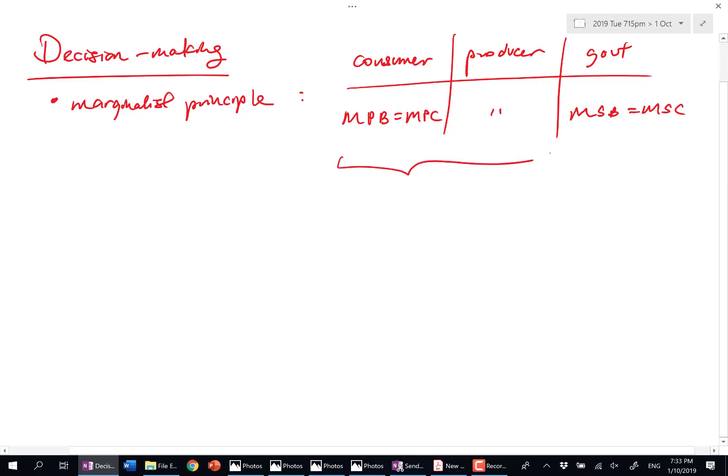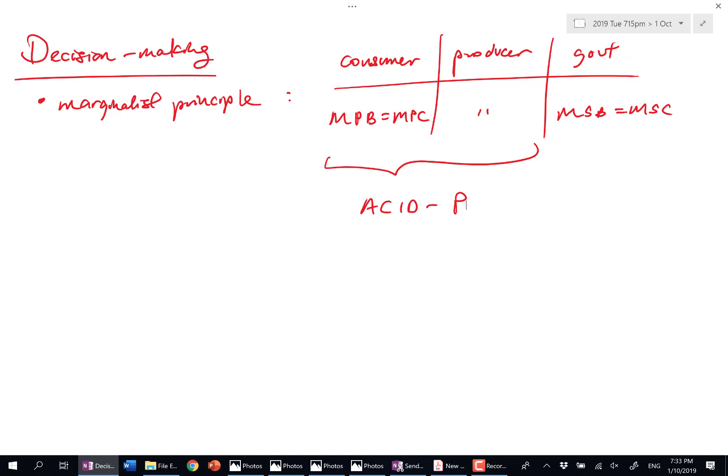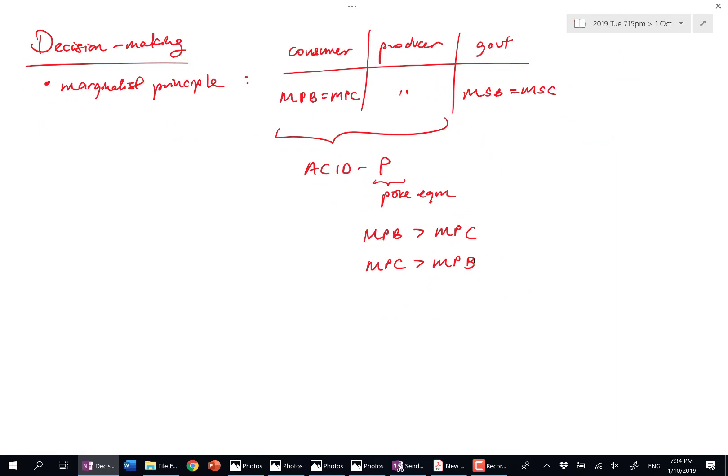As part of the marginalist principle, you're always going to think of the ACIDP framework. So ACIDP framework, I went to review before, and I talked about how to do this for consumers, how to do this for producers. If you want, you can extend to the government as well. There's a video on YouTube covering this. So ACIDP, P means you have to poke the equilibrium. Poking equilibrium means you need to say, what happens if marginal private benefits is higher than marginal private costs? Or what happens when marginal private cost is higher than marginal private benefit? So that kind of explanation is very theoretical. It's very rehearsed. It's like you're explaining a framework.